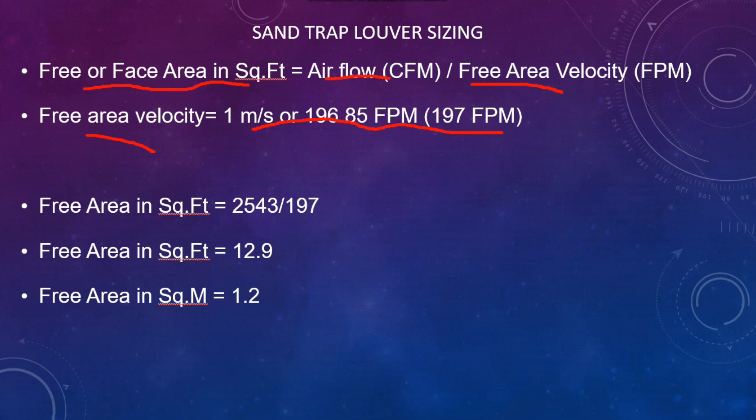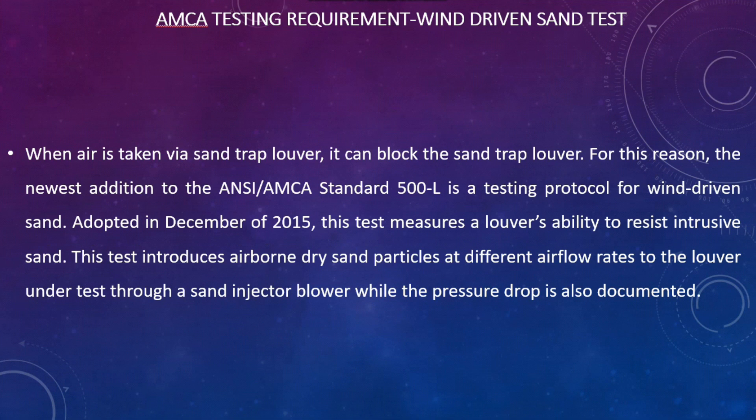We need to understand where this 1 meter per second comes from. For that we have to look into the AMCA standard testing requirements. AMCA — the Air Movement and Control Association — performs 5 different types of tests for louvers. The different test requirements and laboratory arrangements were explained in my last video on fresh air louver sizing. Please watch that video; I have given the link in the description.